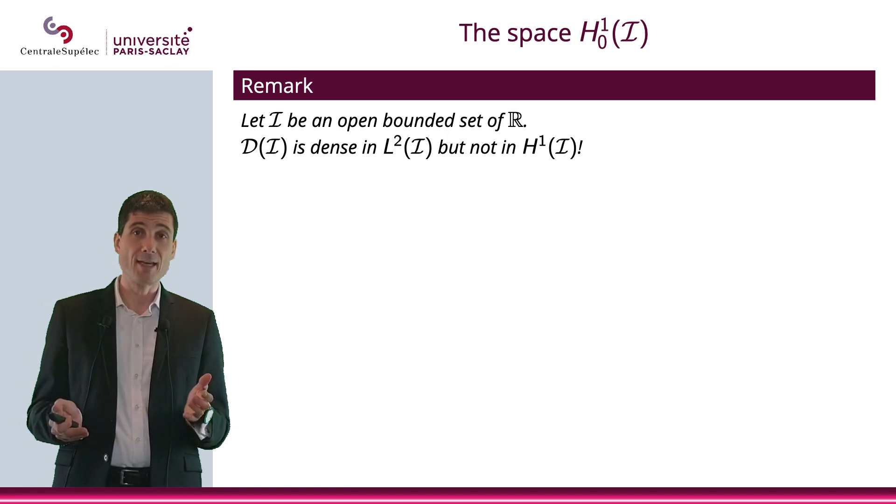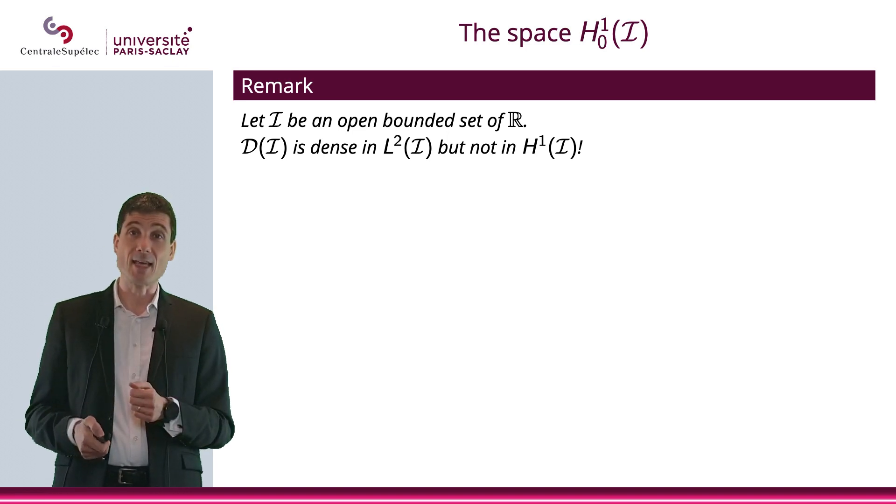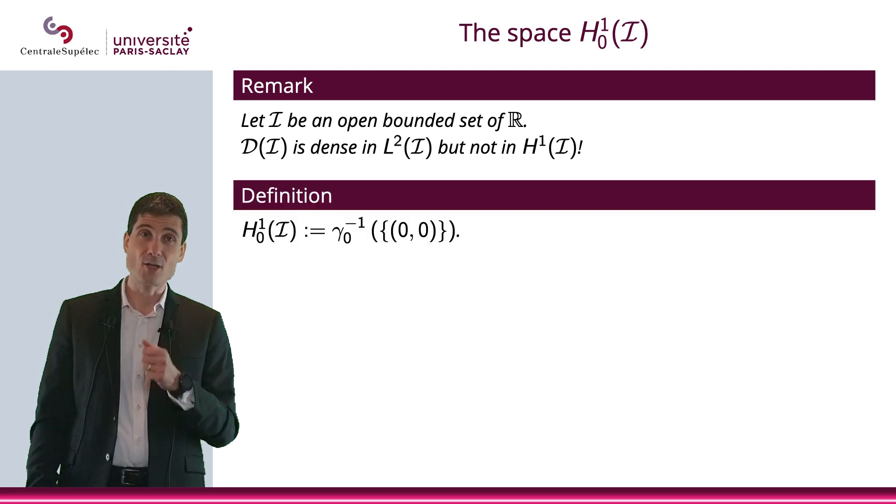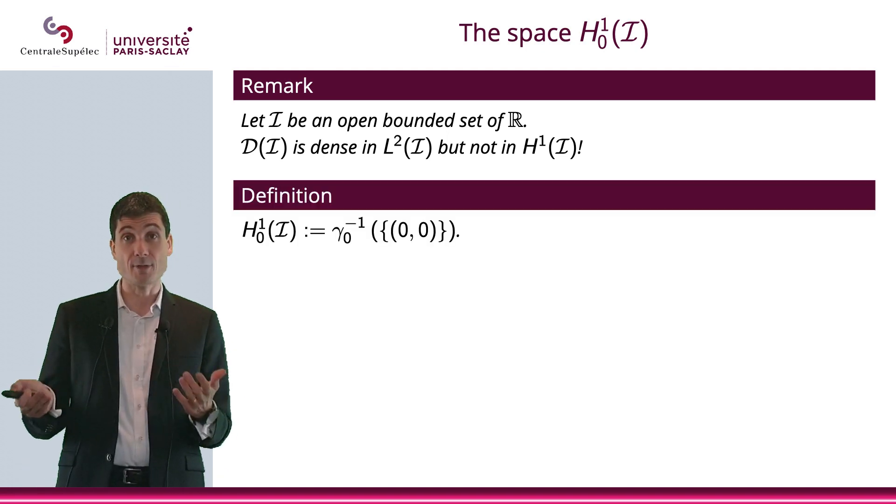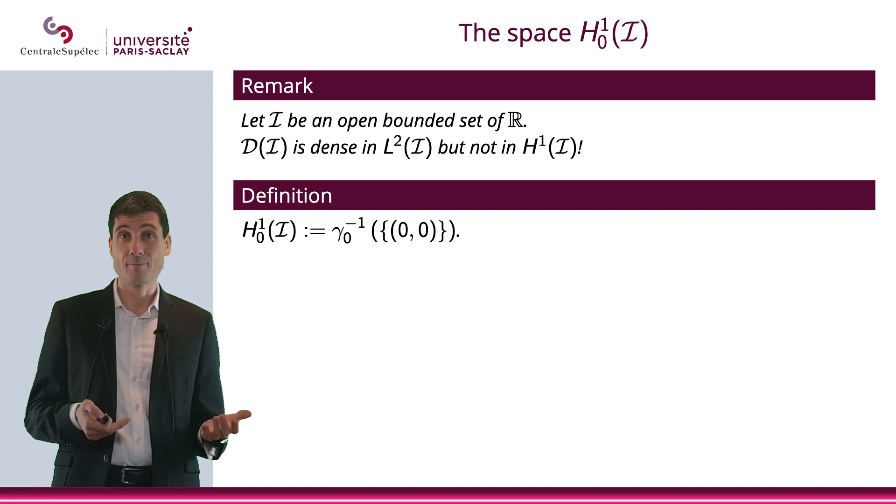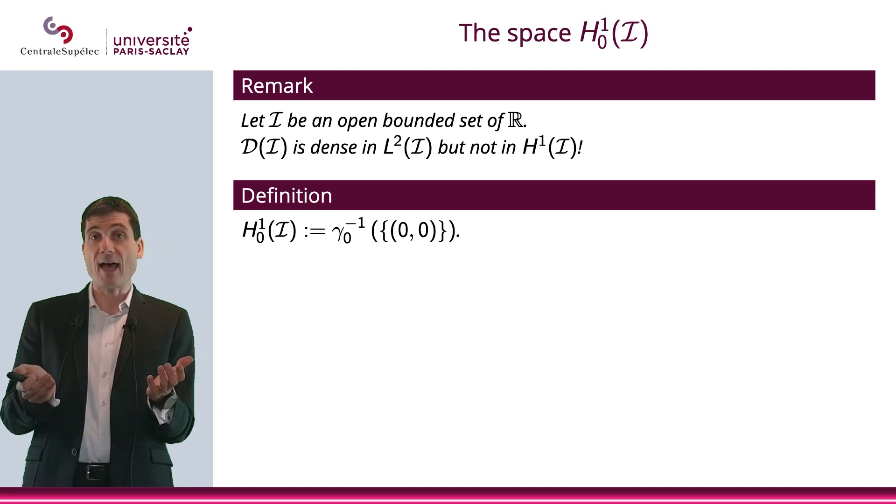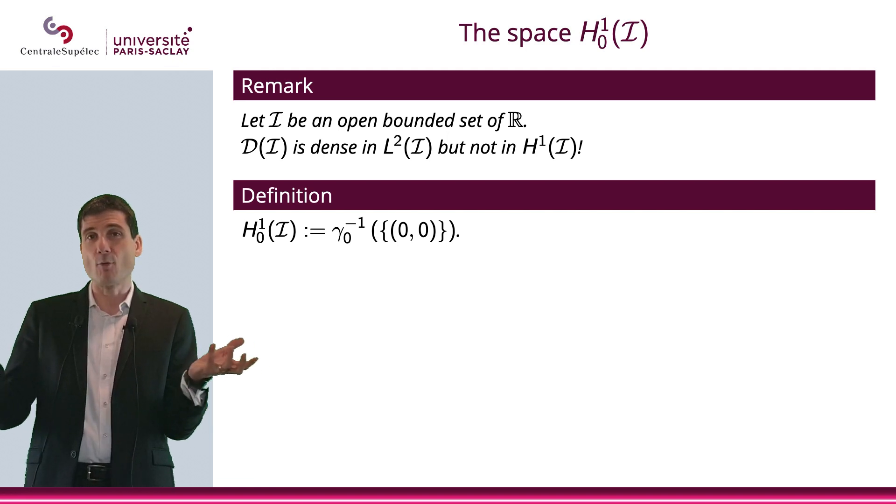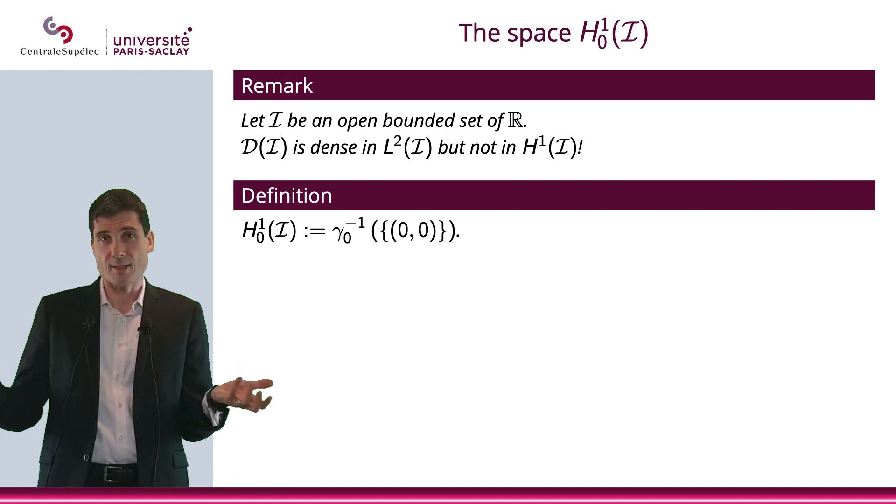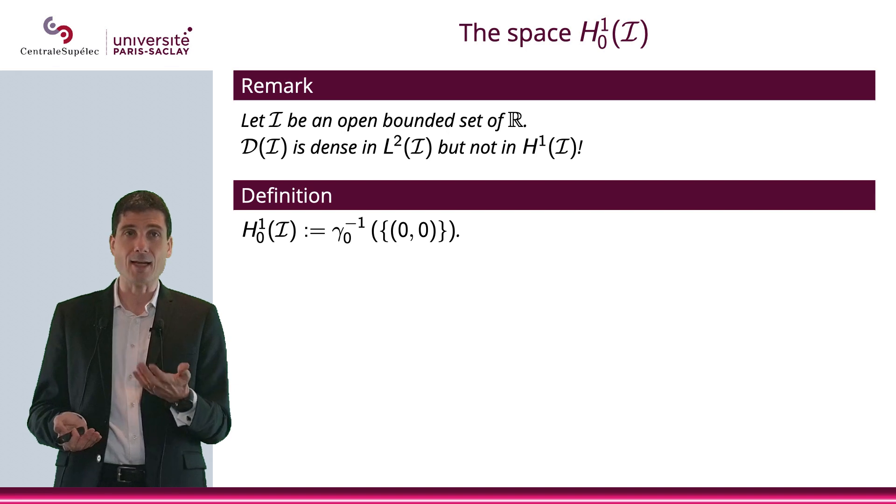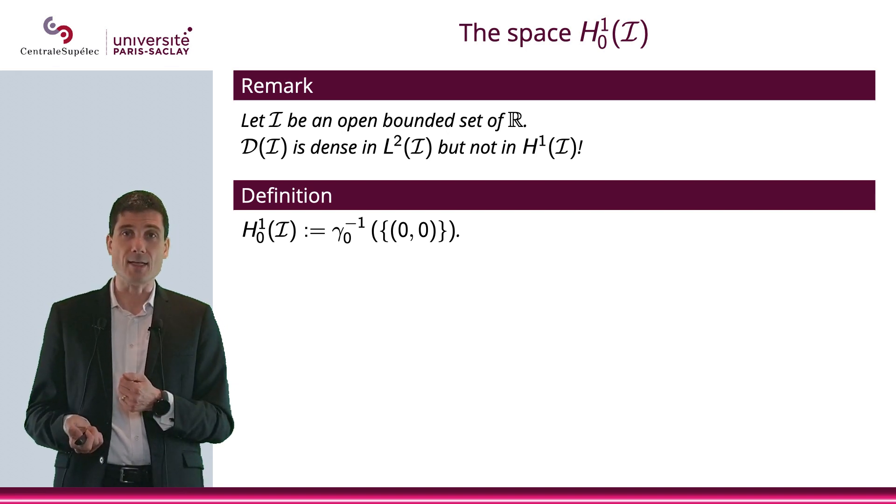This remark being made, let me define the space H^1_0. H^1_0 is the preimage of 0 by the trace operator. So in a sense, it's the function H^1 that have a 0 value at both ends. The trace is equal to 0 at both ends. That is what H^1_0 is.